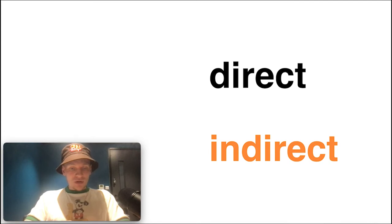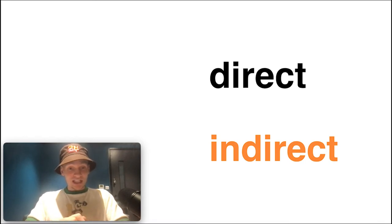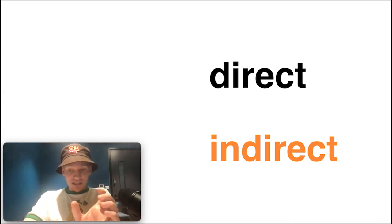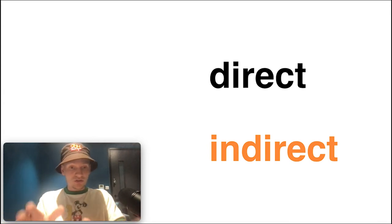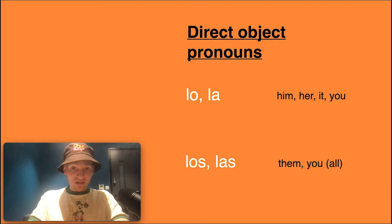There are two types of object pronouns in Spanish: the direct object pronoun and the indirect object pronoun. Object pronouns replace the object in a sentence. Direct object pronouns are essentially directly affected by the action of the verb, and indirect object pronouns are indirectly affected by the action of the verb. Don't worry too much — it'll become clear through examples.